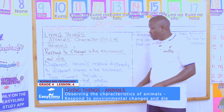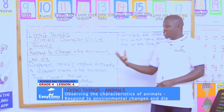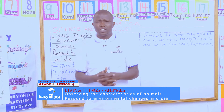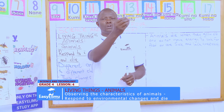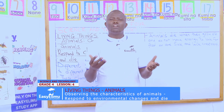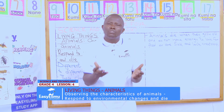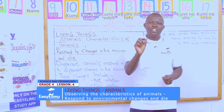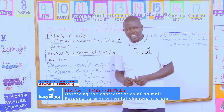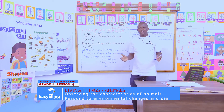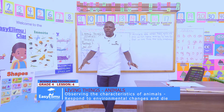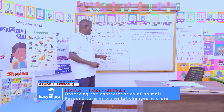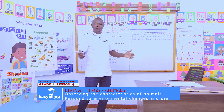And we say different animals respond differently to different changes in the environment. For example, when it is too hot and you go to the sun, how does it feel? We say we look for somewhere you can shade yourself. We say you are responding to the hotness of the weather. Or else when the weather is too cold, we say you go and look for somewhere you can warm yourself. We say you are responding to the environment.